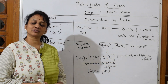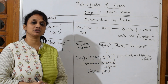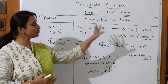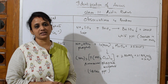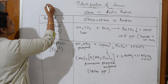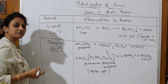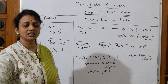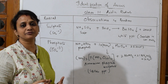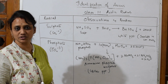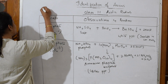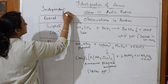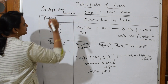Welcome back students. So far we have completed Group 1 and Group 2 acidic radicals. Now I've come to independent radicals. These are the list of independent radicals: sulfate, phosphate, borate, and fluoride. Each independent radical has different tests and different confirmatory tests. So let us write — Group 3 acidic radicals are also called independent radicals.